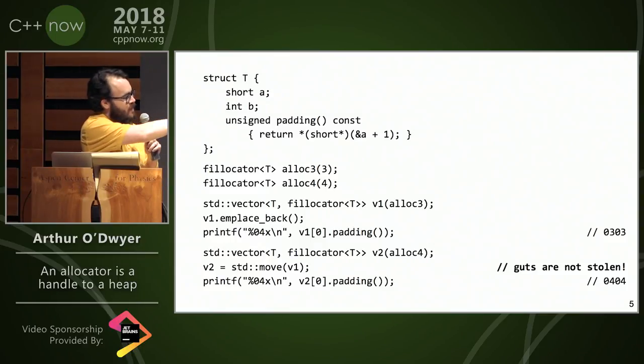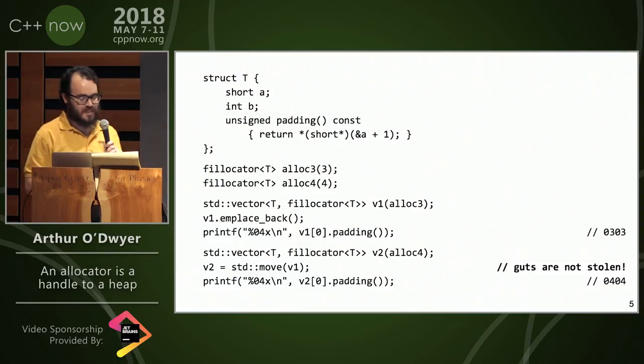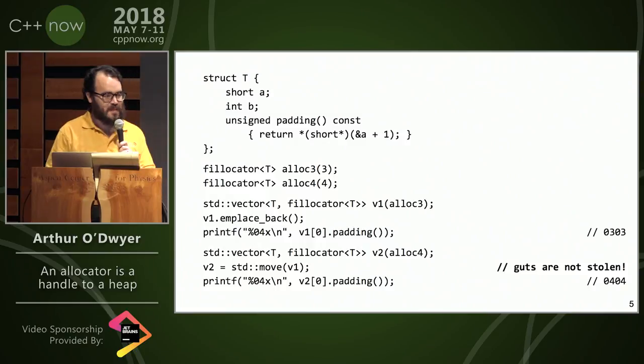And you notice also there, I'm not using v2.emplaceback. I'm actually moving v1's contents into v2. And that changes the padding bits, because the guts don't get stolen. So that was Marshall's example of an allocator as a value type, but not a handle to a heap.